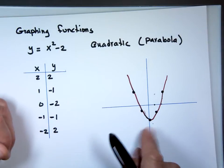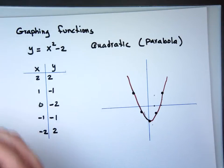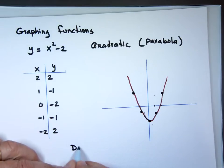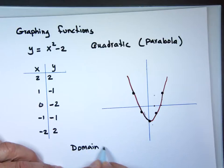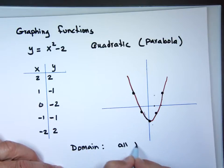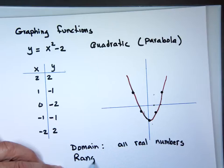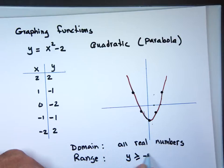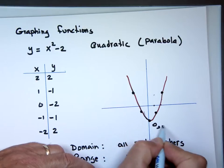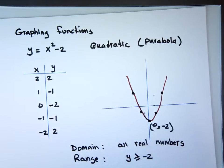This parabola has a minimum value right here. Going back to domain and range: the domain — you can use any x value. The range is the y values, and the smallest y value is negative 2. The point (0, -2) is the minimum, so the range goes from negative 2 all the way to infinity.